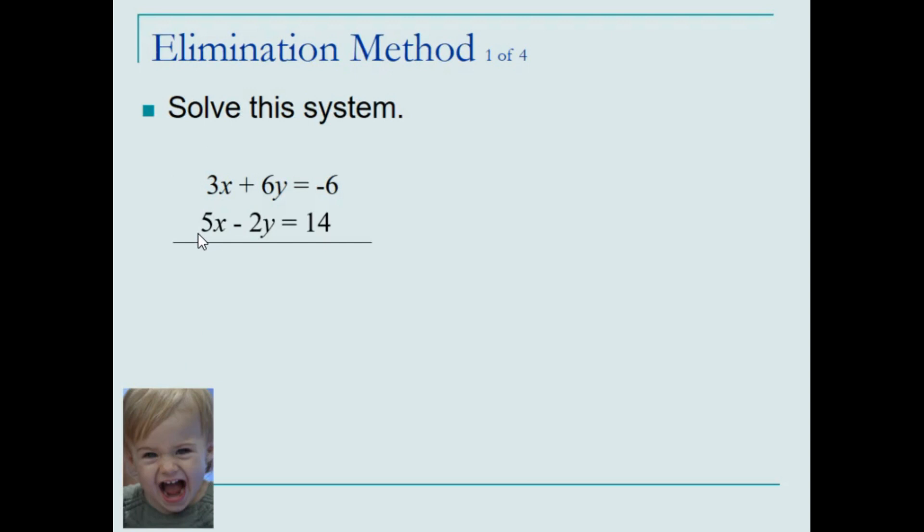Combining like terms, we would have 8x, we would have 4y equal to some constant value. In this case, we need to choose one or the other variables and convert one of the equations by using multiplication property of equality such that when like terms are added together, a variable is eliminated.